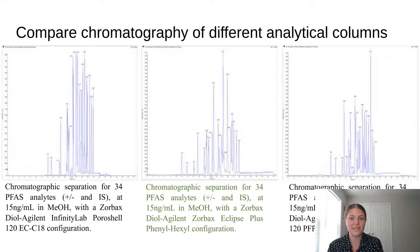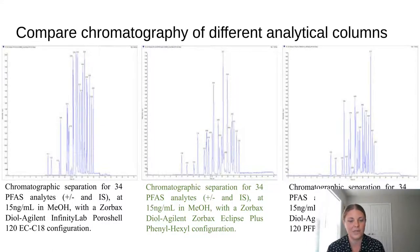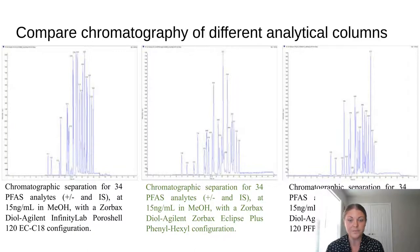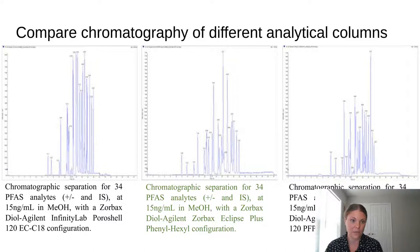Running a standard mixture of 34 individual PFAS analytes at 15 nanograms per milliliter in methanol, injected using all three configurations with varying analytical columns, you can see the different results. On the left is the C18 configuration, the phenylhexyl configuration, and the PFP configuration. What you're looking at is the total ion chromatogram representing all peaks eluting and collected by the mass spectrometer — not super helpful for selectivity yet because we can't see everything individually.